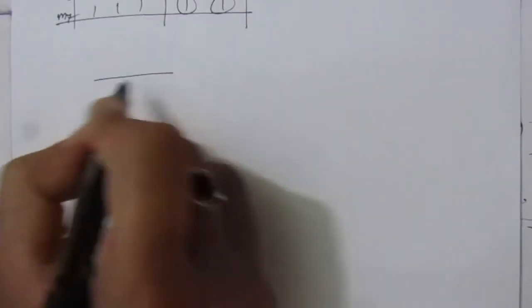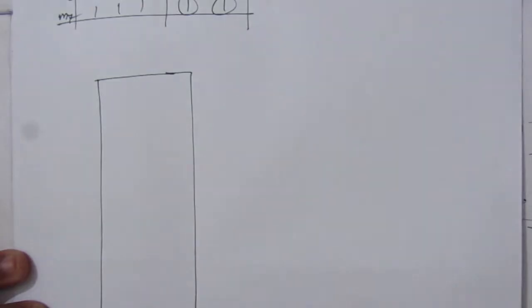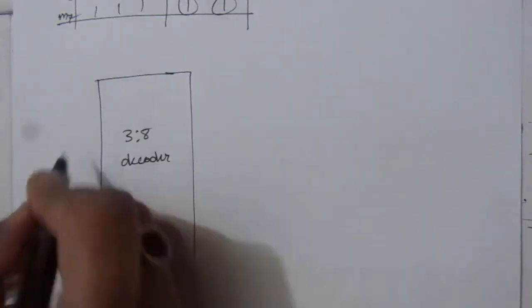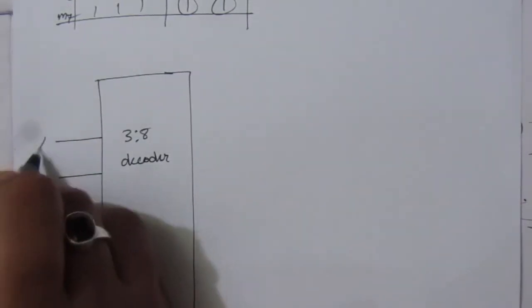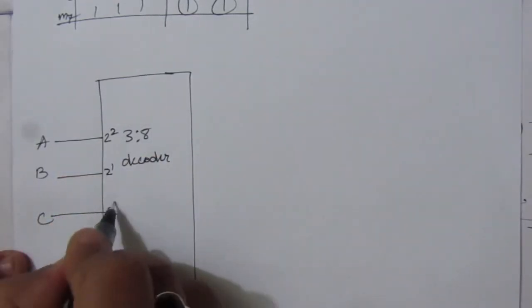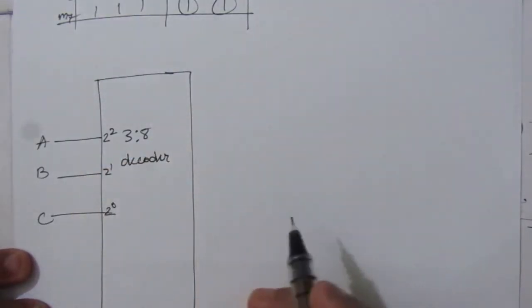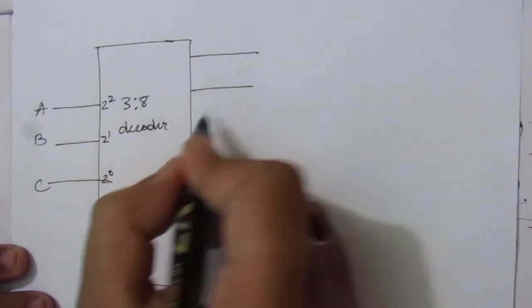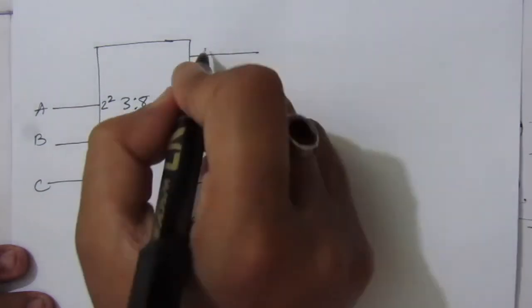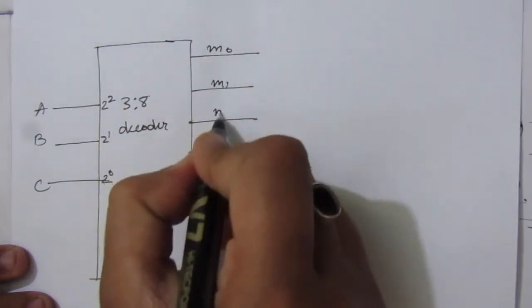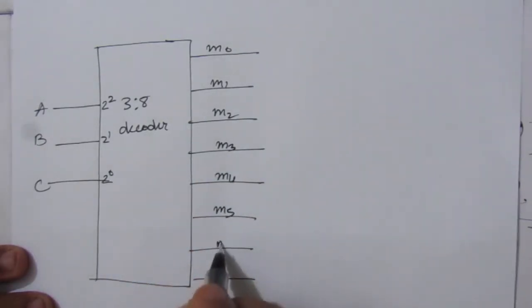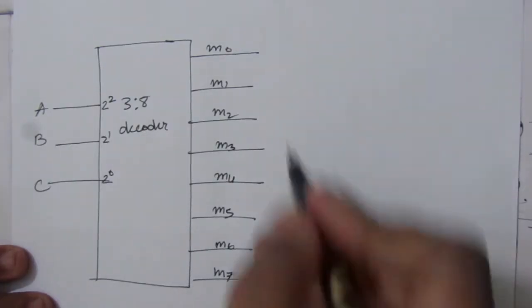Let us draw a 3×8 decoder. It has three inputs A, B, and C corresponding to 2², 2¹, and 2⁰. It produces eight outputs which are the minterms: m0, m1, m2, m3, m4, m5, m6, and m7.